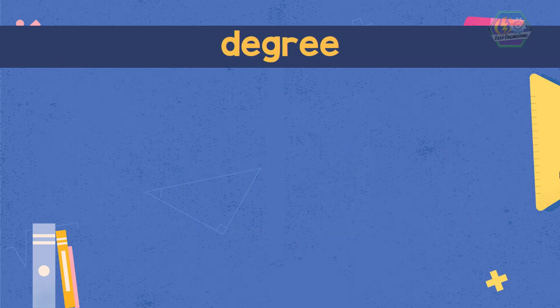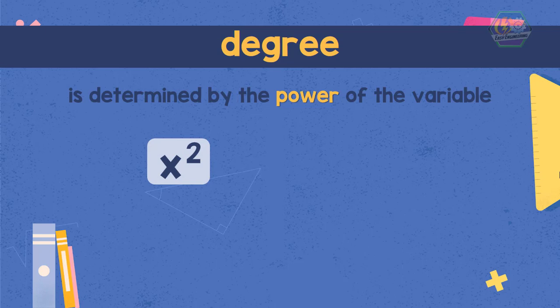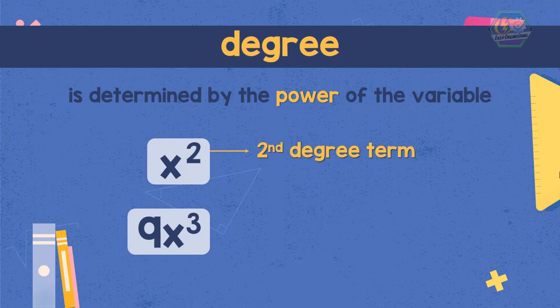Degree of a term is determined by the power of the variable. If you have a term x squared, then we can say that the degree of the term is 2, or it is a second degree term. Or we have a term 9x cubed. The power of the variable is 3, so it is a third degree term.